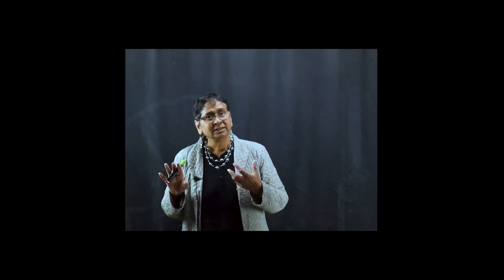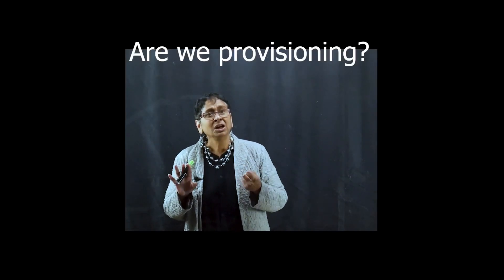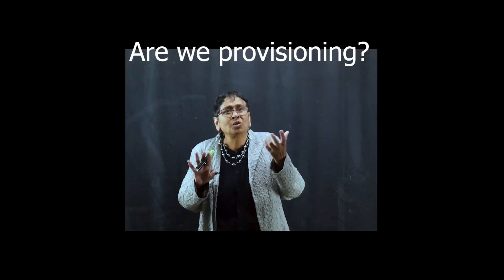Julie Nelson, the feminist economist, has done a tremendous amount of work on the need to replace the idea that we do not do interpersonal utility comparisons — replacing it with concepts of caring for each other and caring for nature. She uses the word 'provisioning': we may want to make interpersonal utility comparisons in terms of whether we are provisioning — providing for housing, health, education.